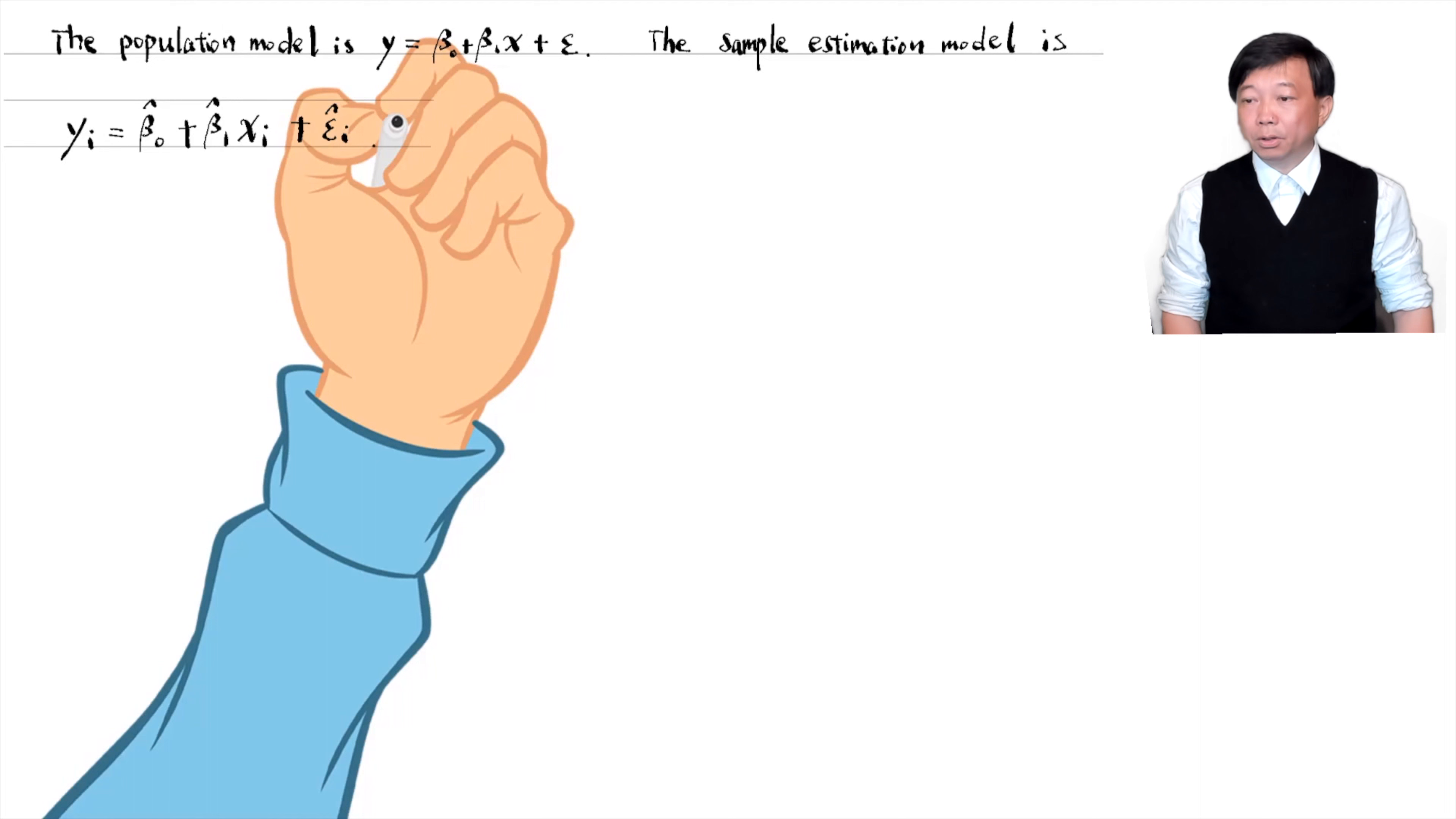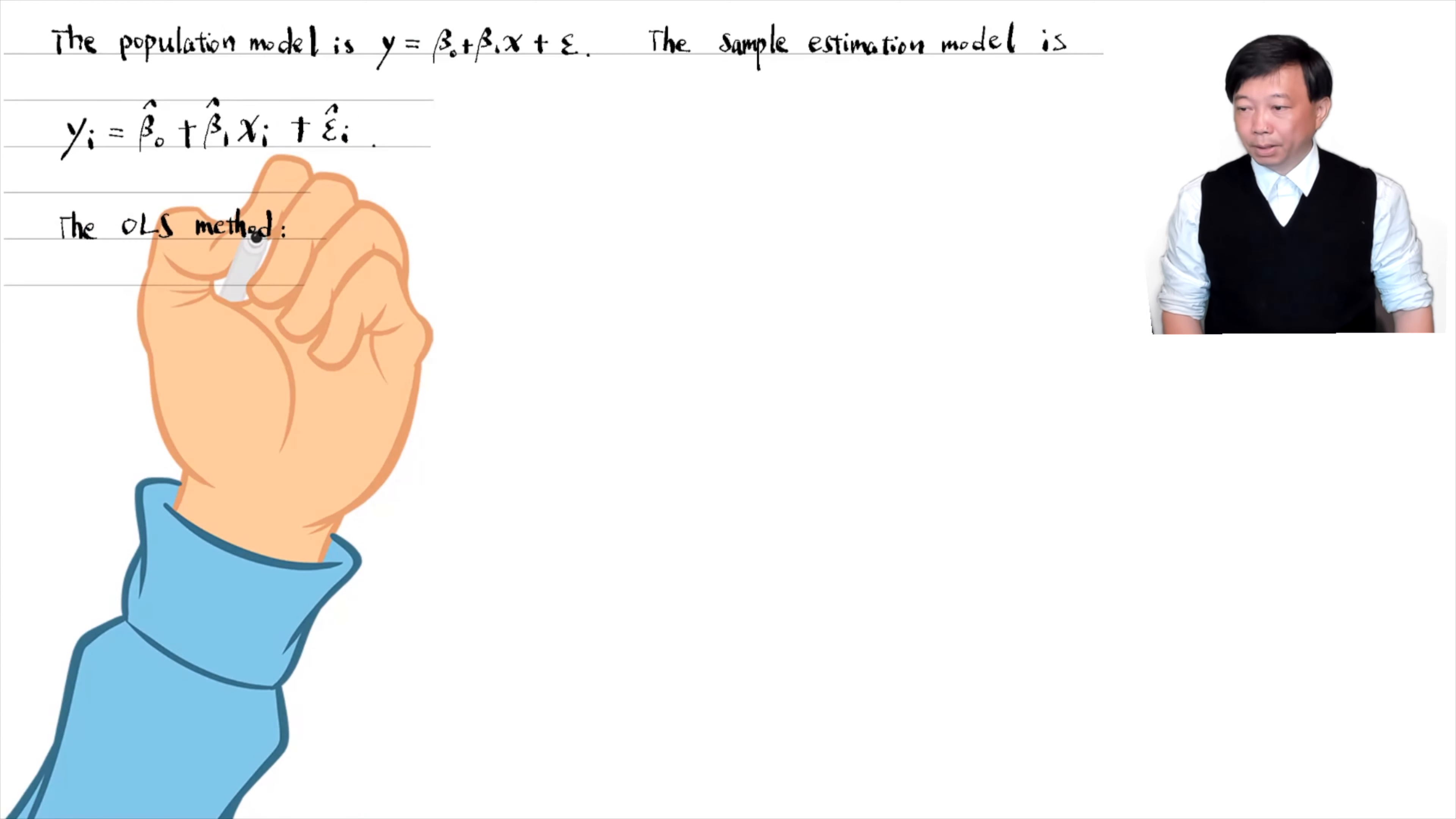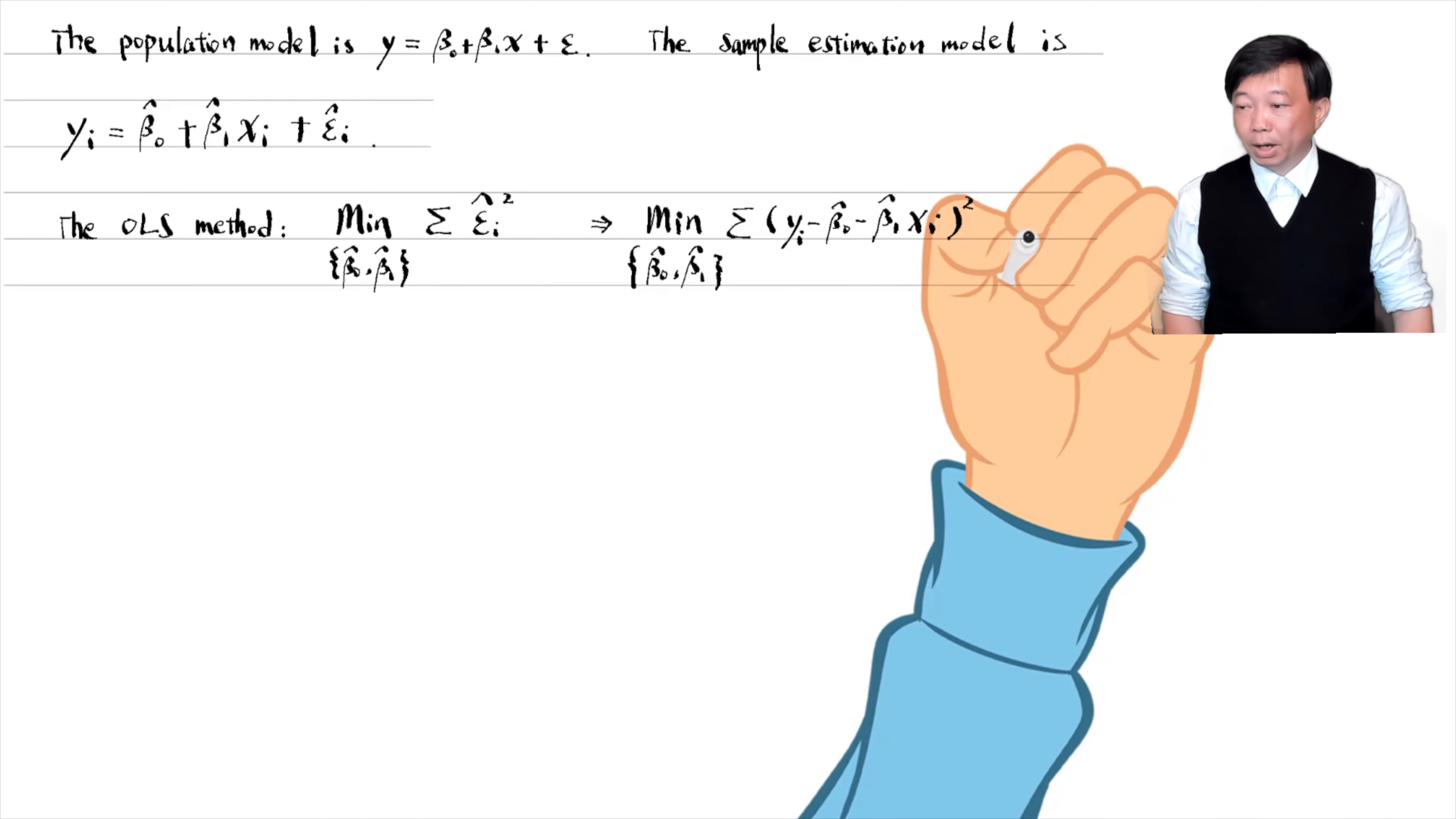Beta 0 hat and beta 1 hat are the OLS estimators for the population parameters beta 0 and beta 1. The epsilon hat is the residual which is the estimate for the error term epsilon. The OLS estimation method chooses beta 0 hat and beta 1 hat to minimize the sum of squared residuals.